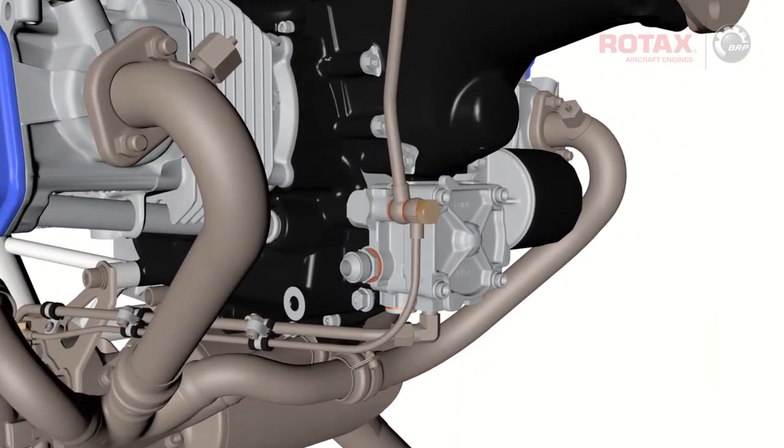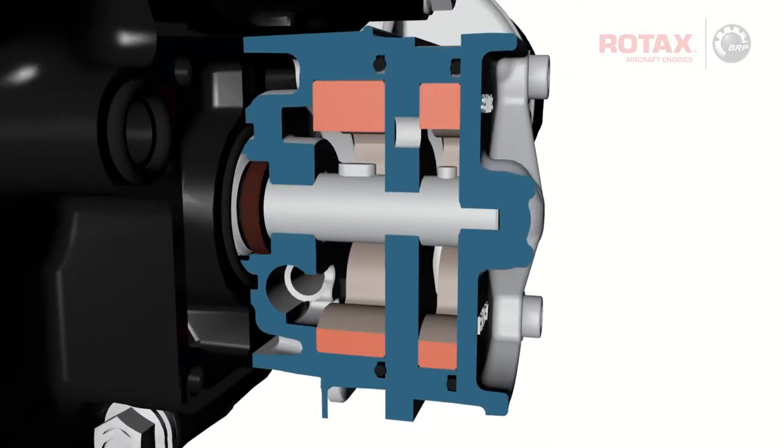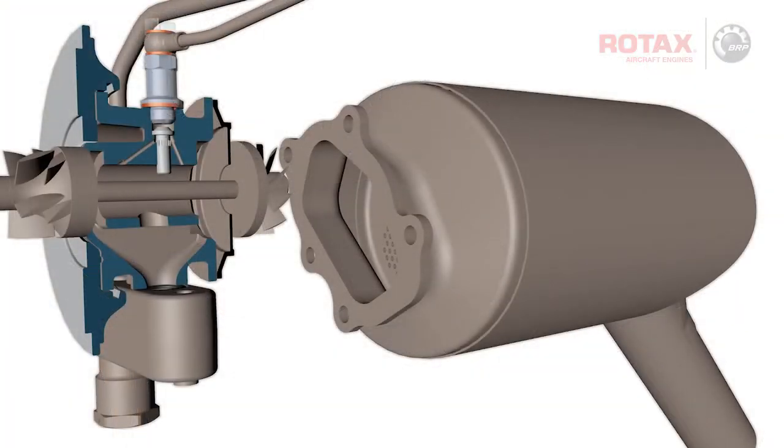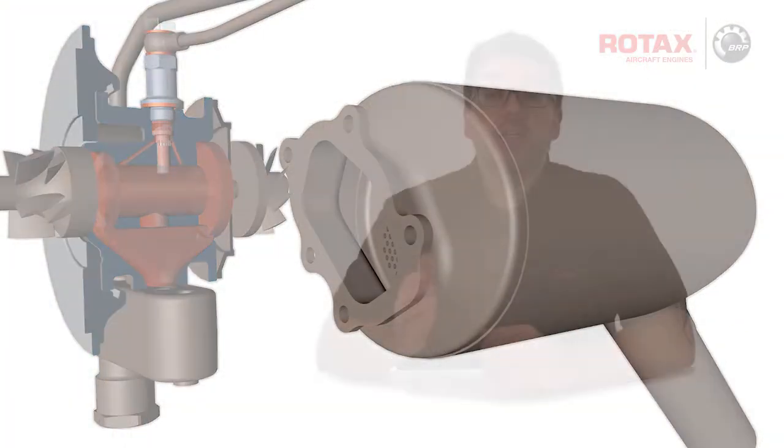In isolated cases, after a long standstill, strong smoke emissions may occur upon first start of 915 IS-series aircraft engines. This might be caused by seepage of oil from the oil tank into the turbocharger oil sump due to insufficient sealing.